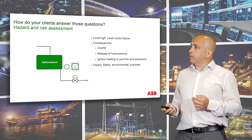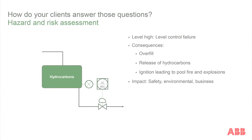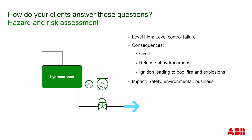To explain this, I'm going to use this simple example of a separator. We have flow coming in and flow going out. To control the level in that separator, we've got a level controller. So what can go wrong? Well, if we have a problem with that level controller, the level may rise.